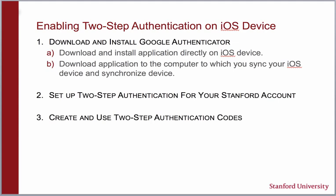Enabling two-step authentication on your iOS device is a simple process, which includes the following steps. First, downloading and installing Google Authenticator. Second, setting up two-step authentication for your Stanford account. And last, creating and using two-step authentication codes. In today's tutorial, we will be downloading and installing the application directly on the iOS device.